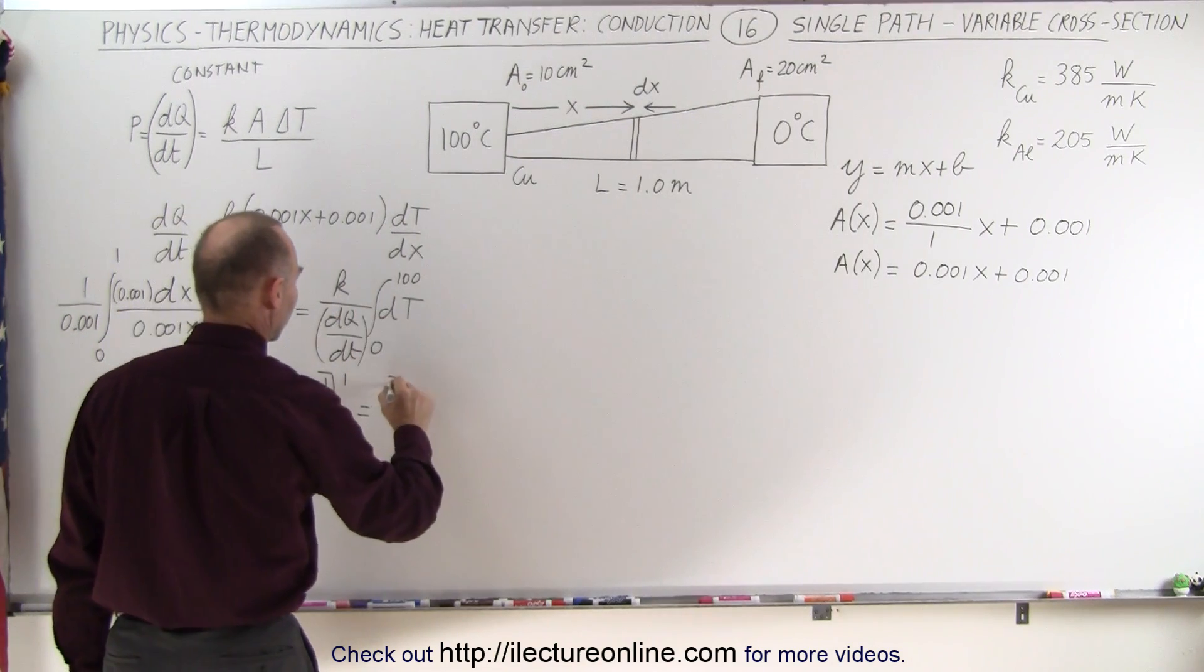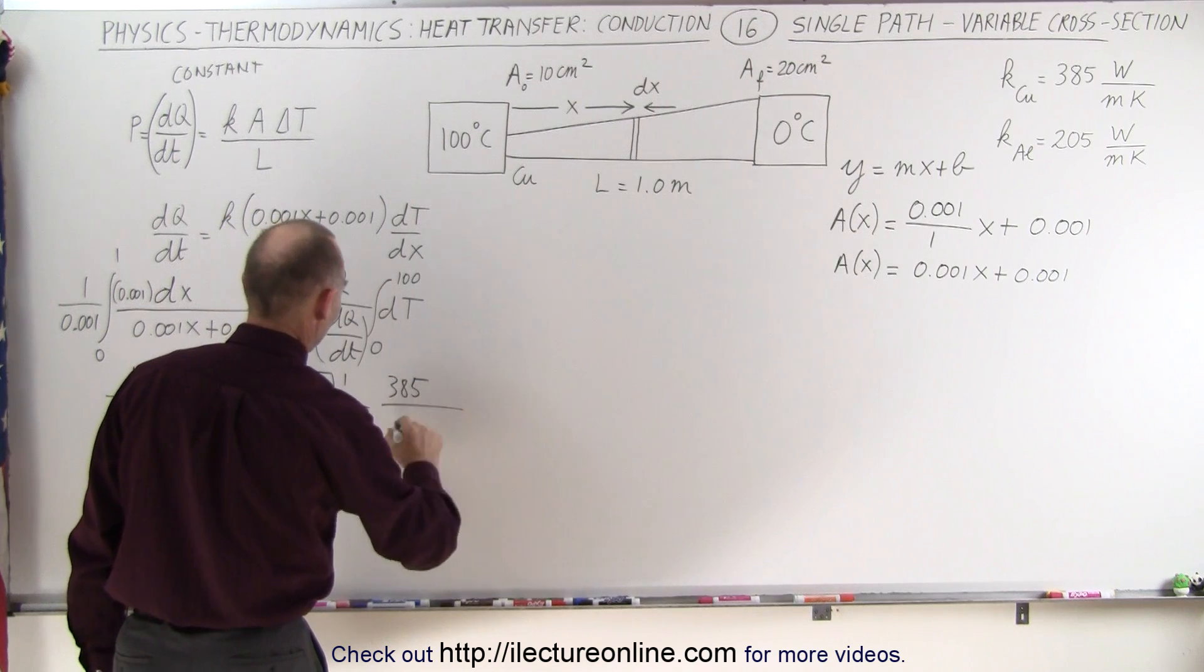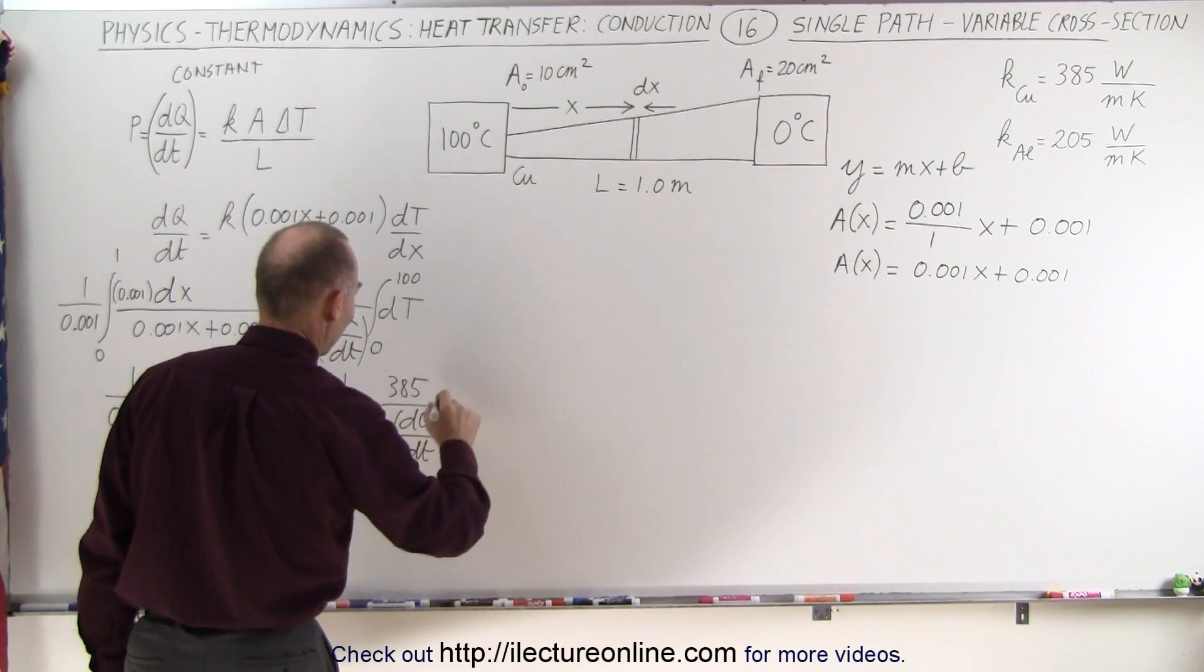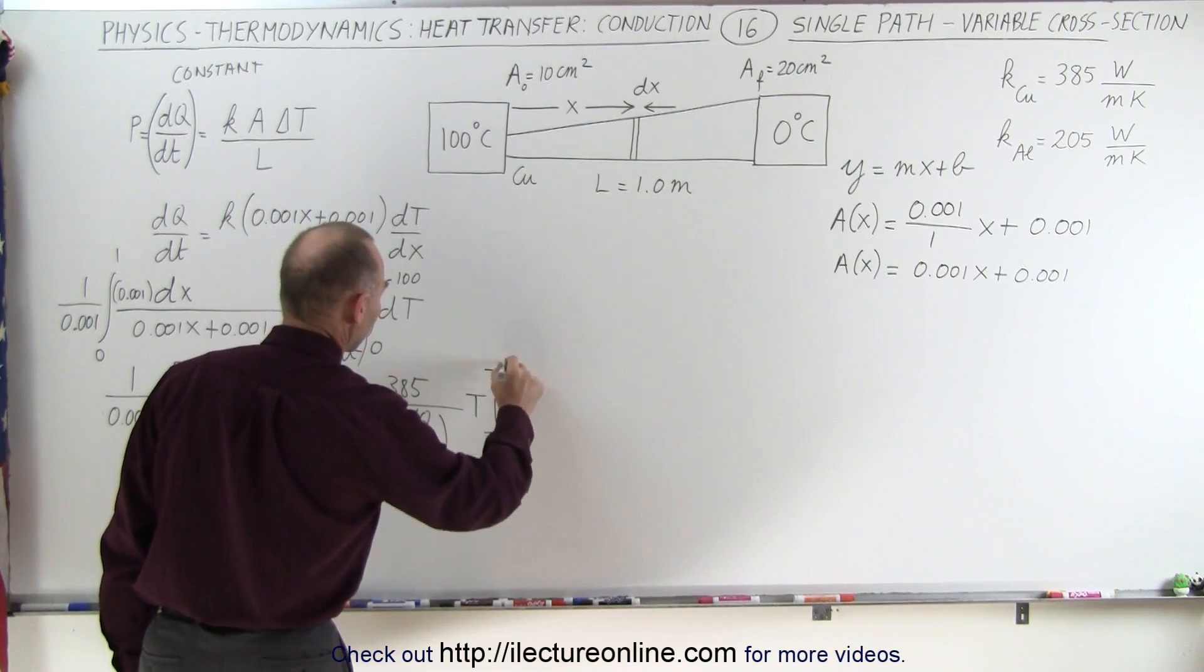...and on the right side, this becomes 385 divided by dQ/dt. Again, that's what we're looking for, times the temperature evaluated from 0 to 100.